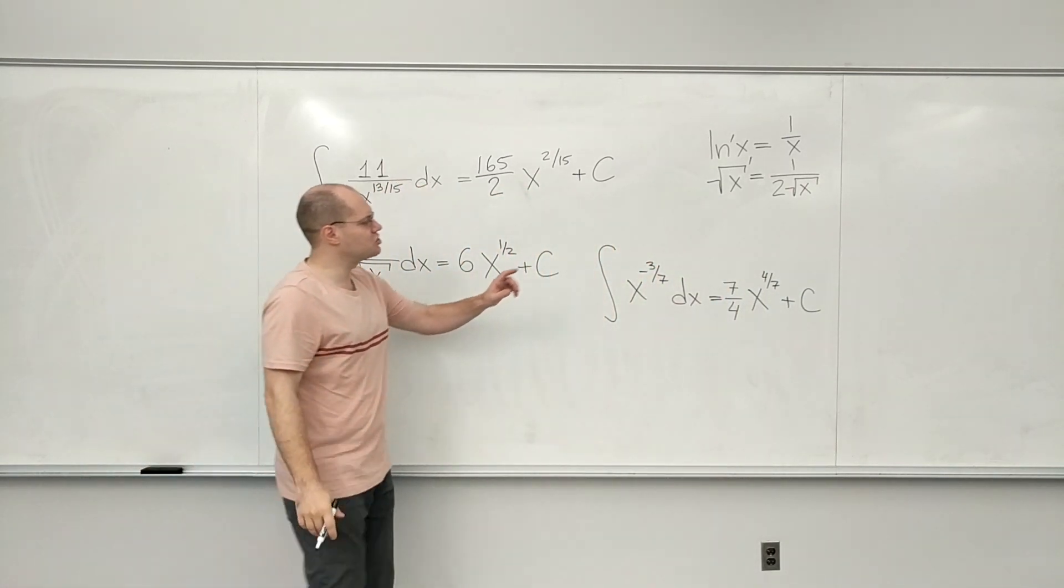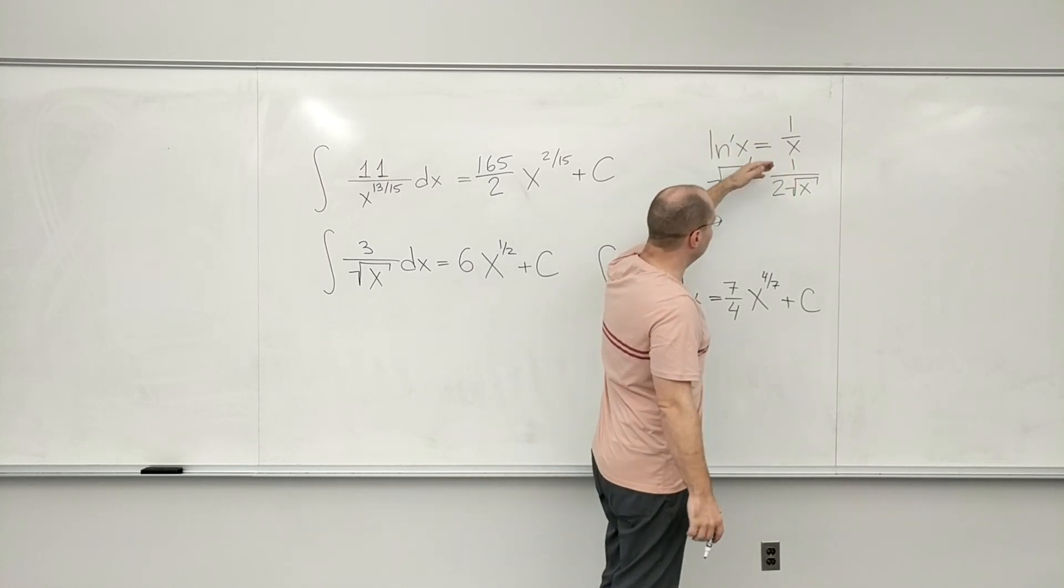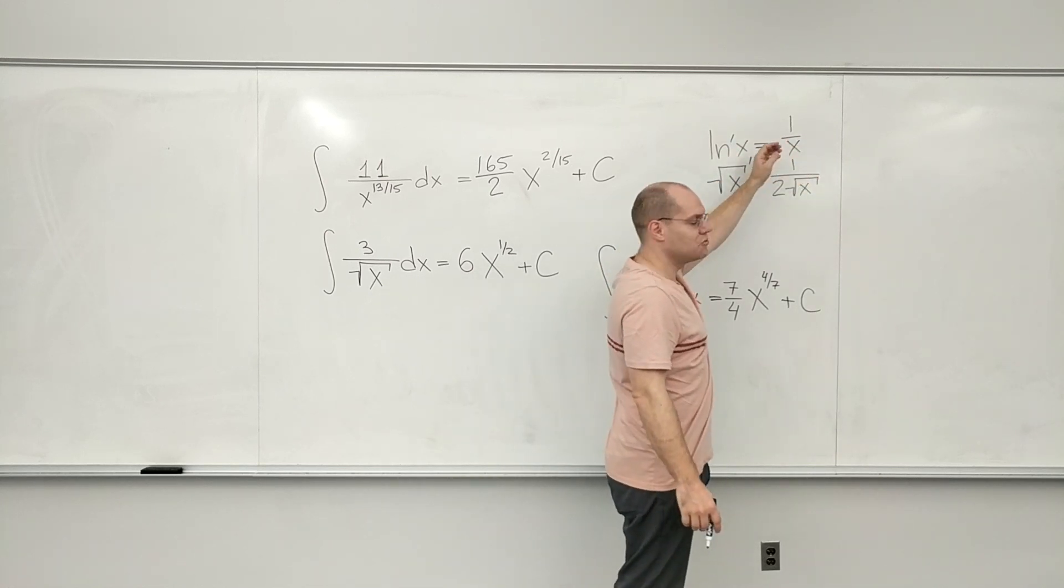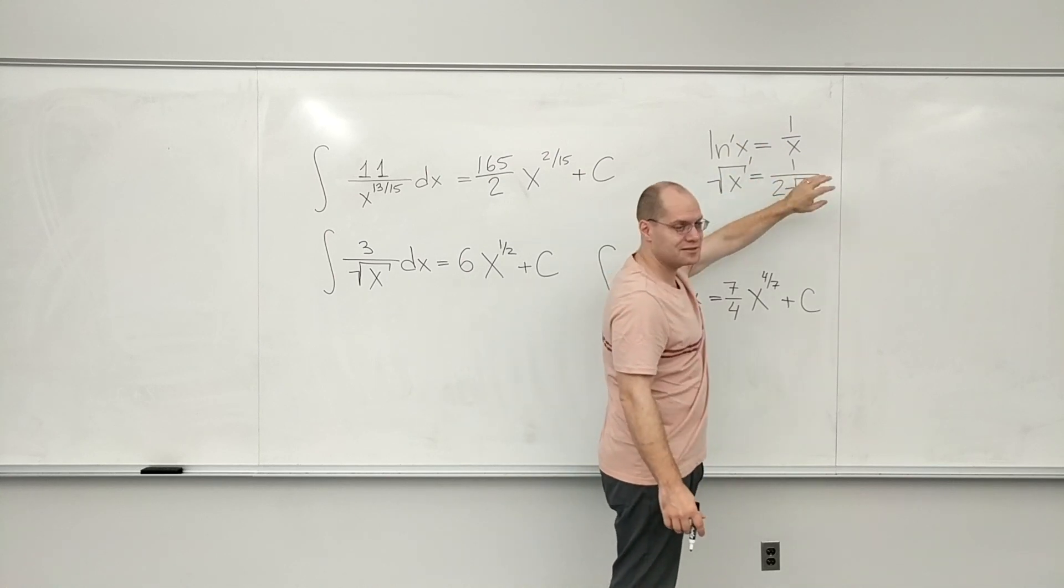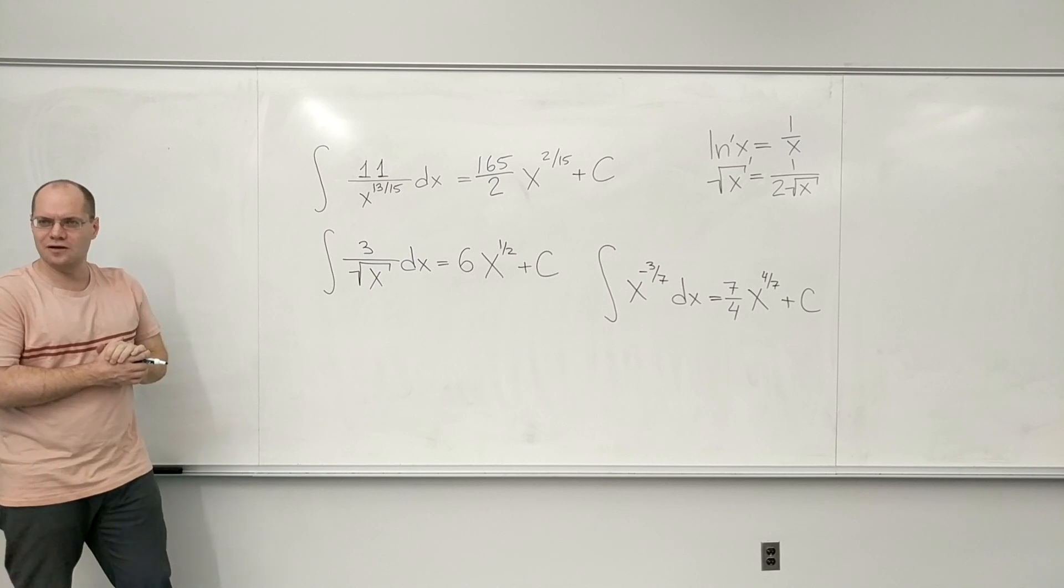Because the square root of x is x to the one half. And so the derivative is one half times x to the minus one half, which means that it's on the bottom and that it's under the square root. And yes, it's a special case of the power law.